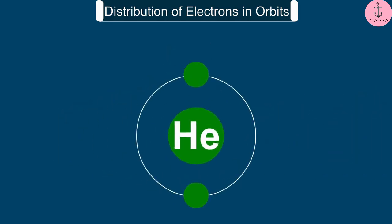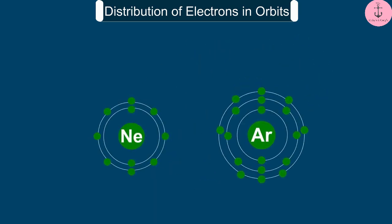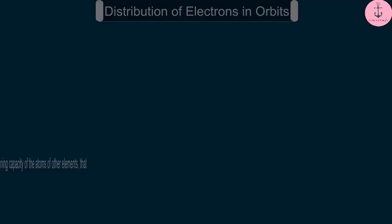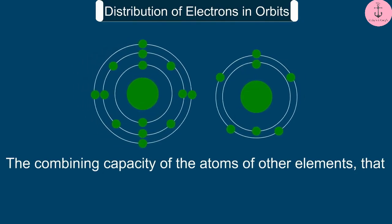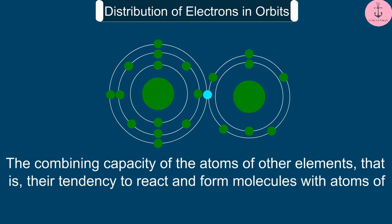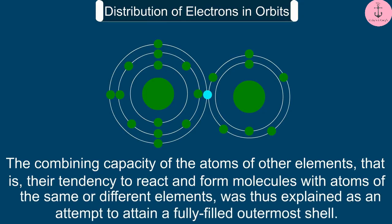Of these inert elements, the helium atom has 2 electrons in its outermost shell, and all other elements have atoms with 8 electrons in the outermost shell. The combining capacity of the atoms of other elements, i.e., their tendency to react and form molecules with atoms of the same or different elements, was thus explained as an attempt to attain a fully filled outermost shell.